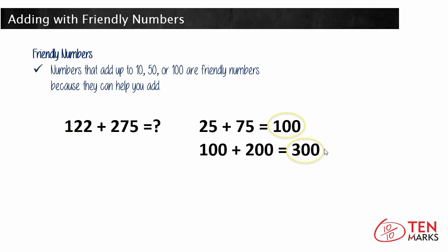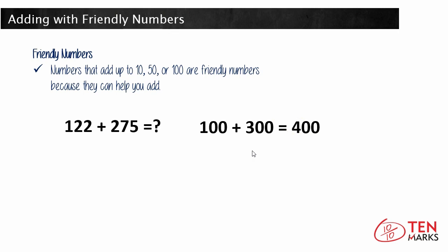Now you have two friendly numbers here that you're going to add together to get the total. 100 plus 300 equals 400.